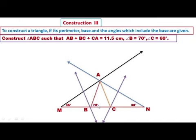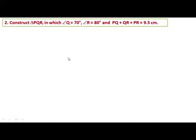Then join point A and B, and join point A and C. The measure of angle B is equal to 70 degrees and the measure of angle C is equal to 60 degrees. This is our triangle ABC.